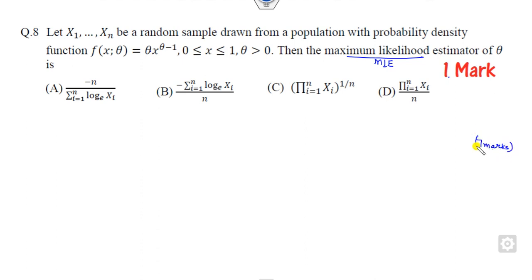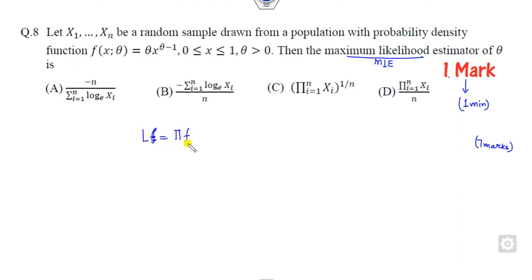What is the concept behind it? Try to learn from this video. For question 8, it is one mark so you should be able to solve it in about one minute. How can you find the MLE? It is a very simple task. Whenever there is a task of maximum likelihood, you have to define a function L called the likelihood function. When you substitute the values and take the product, you get theta raised to the power N, because the summation varies and we take the product over all observations.